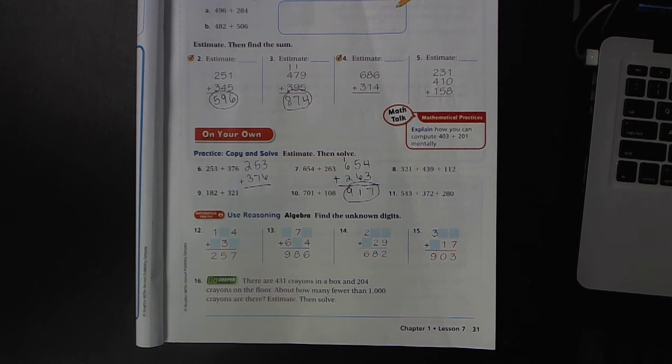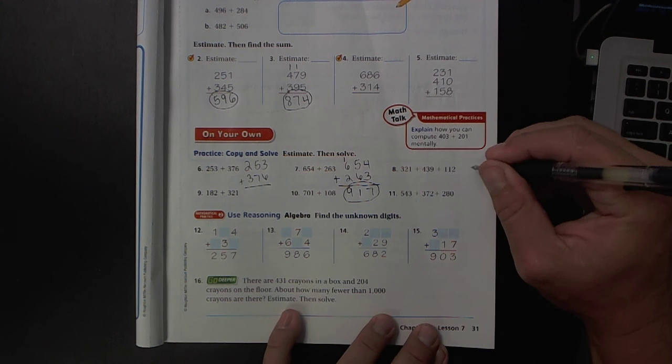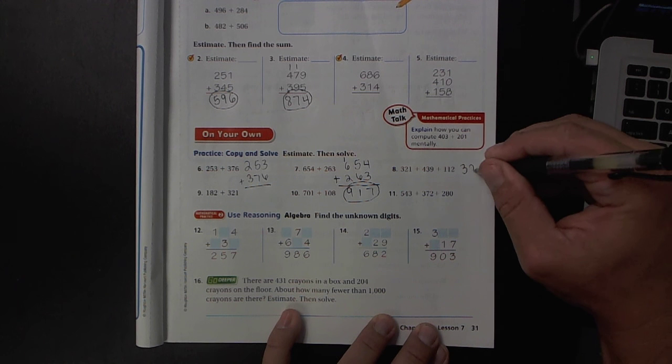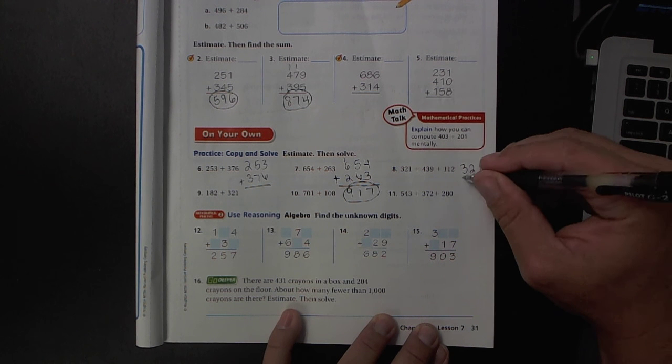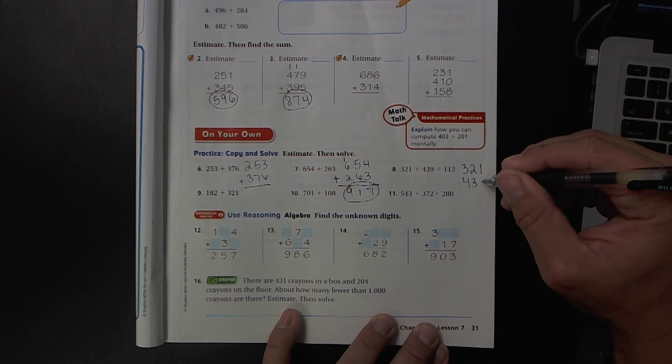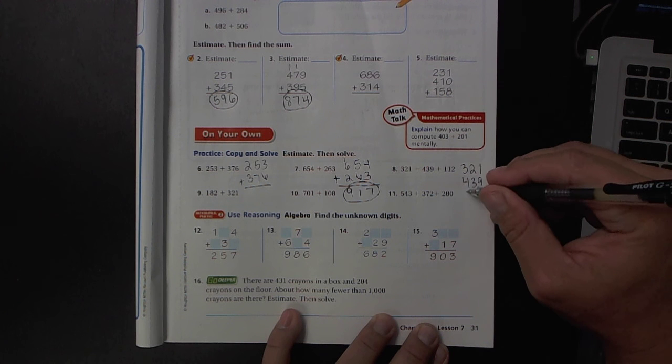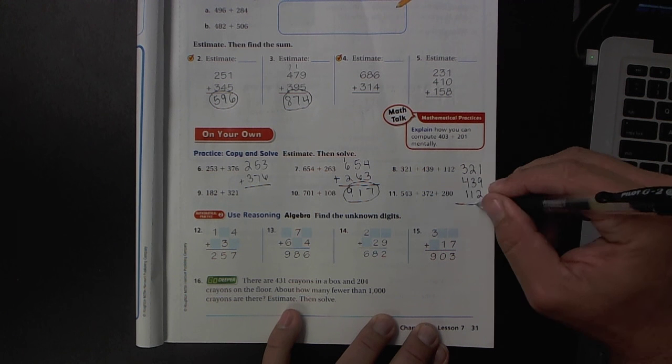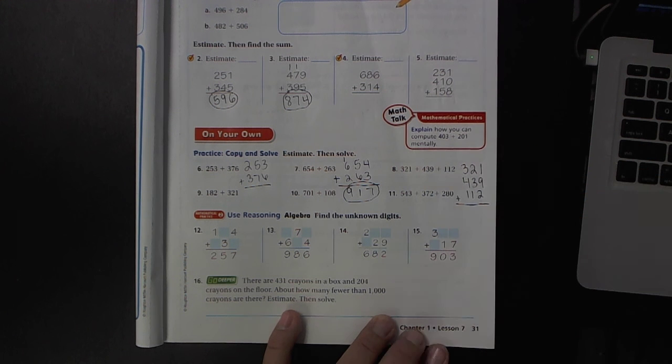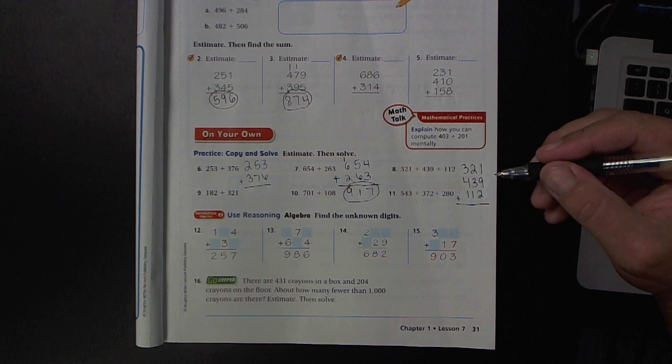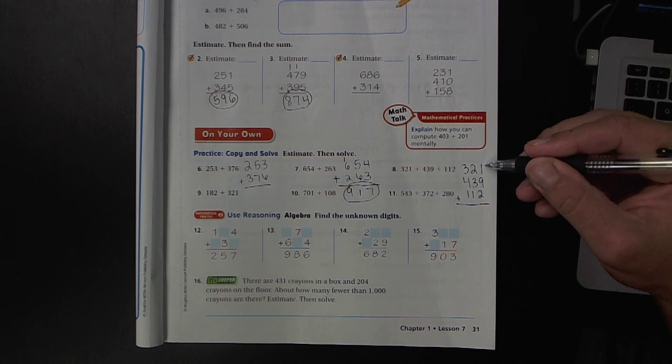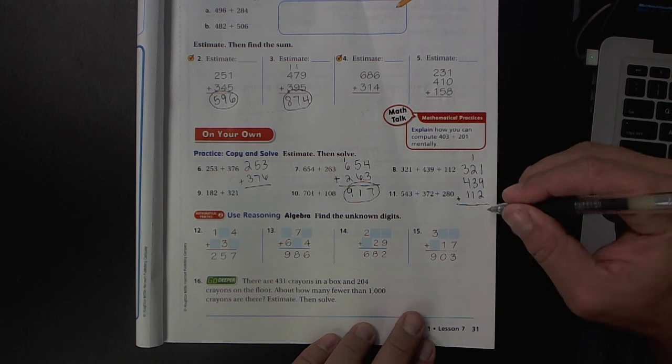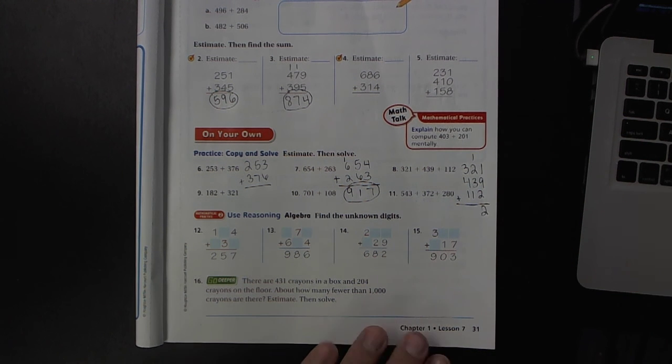All right, number 8. This is a larger problem because it involves 3 numbers. But the process is still the same. You're just adding more numbers. 9 plus 1 is 10, plus 2 is 12. Carry that 1. Keeping my work nice and organized on the page, crisp and clean.